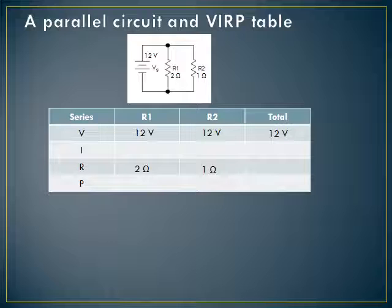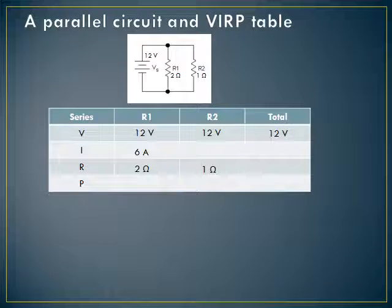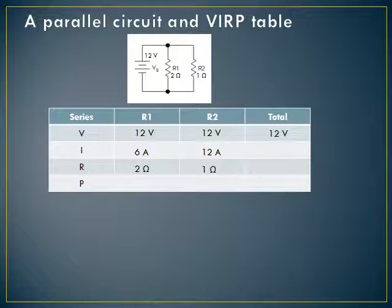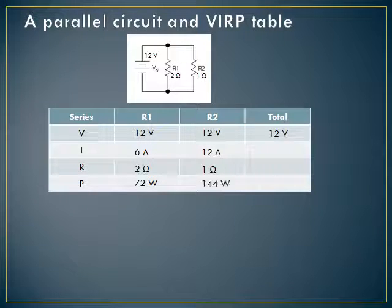Now we have two known values in our R1 and R2 columns. Using I equals V over R: the current through R1 is 6 amps and the current through R2 is 12 amps. The power for R1 is 72 watts and the power for R2 is 144 watts.